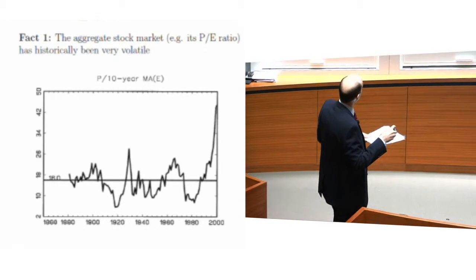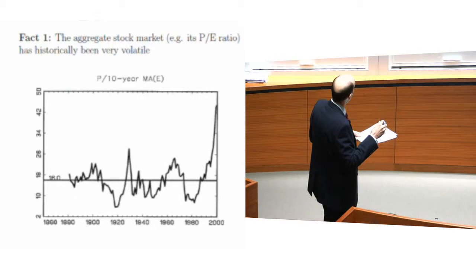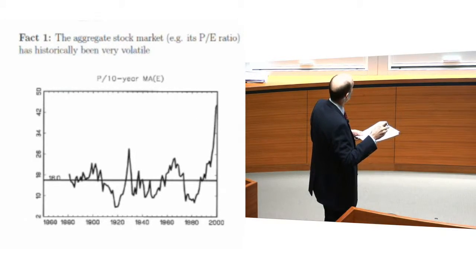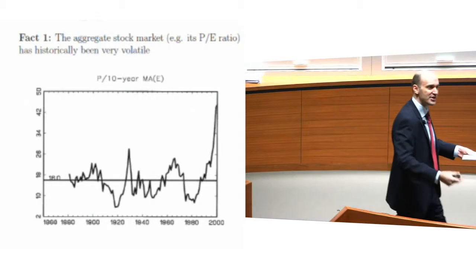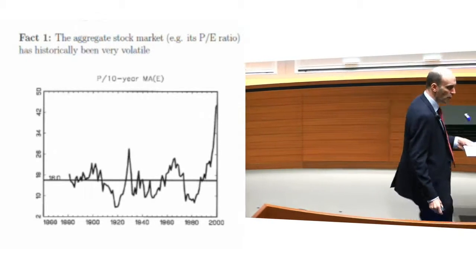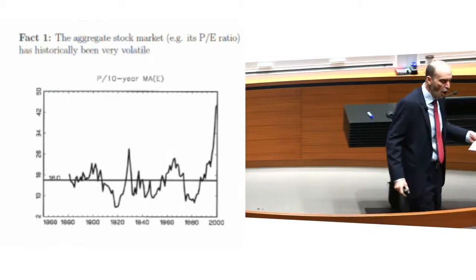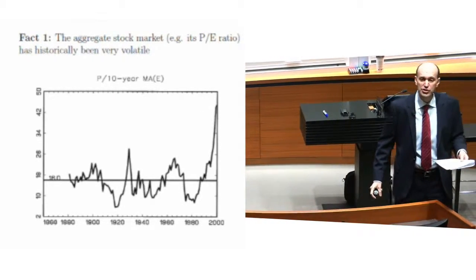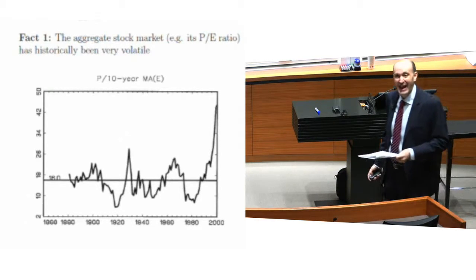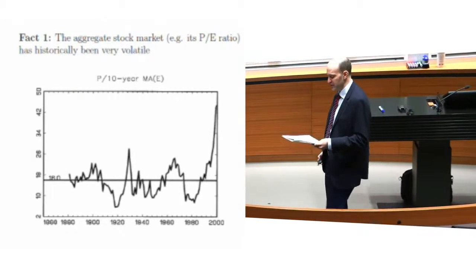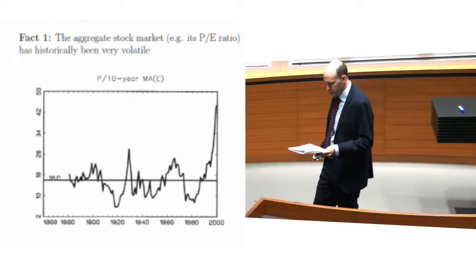Sometimes the price-to-earnings ratio is quite low, like four, sometimes as high as 40 or so. And so there's a very basic and fundamental question, which is: why does the stock market fluctuate so much, and how should we respond to its fluctuations?